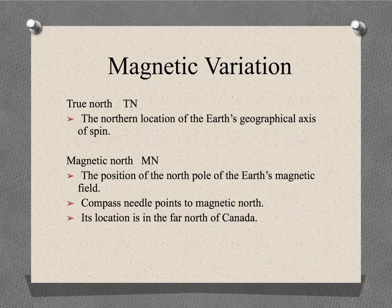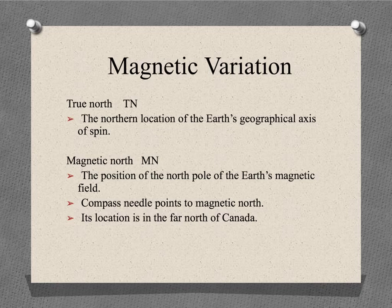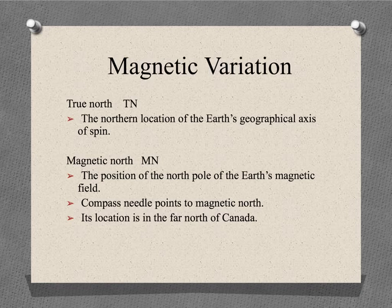The Earth's magnetic north pole and true north are not the same position on the Earth's surface. True north is the northern location of the Earth's axis of spin, which is the basis for lines of latitude and longitude. Magnetic north is the position on the Earth's surface of the north pole of the Earth's magnetic field, and lies about 1,500 kilometres away from the true north pole, in the Arctic Ocean north of Canada.